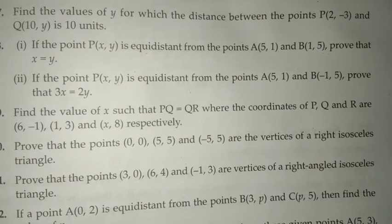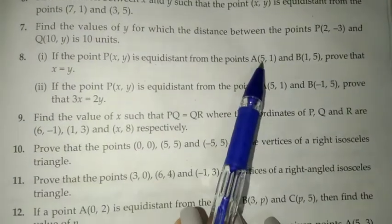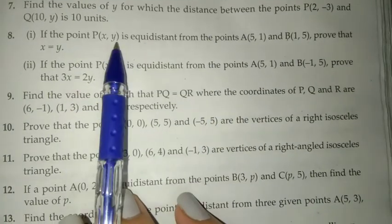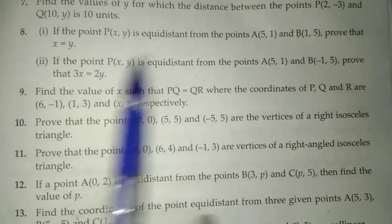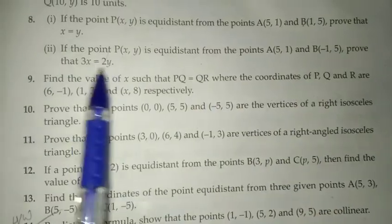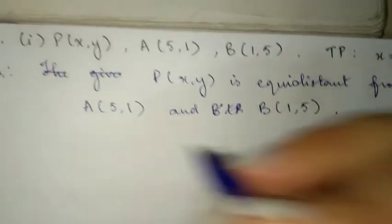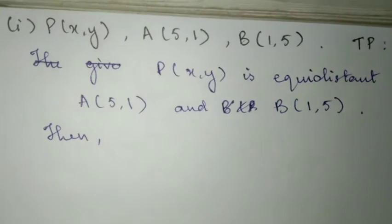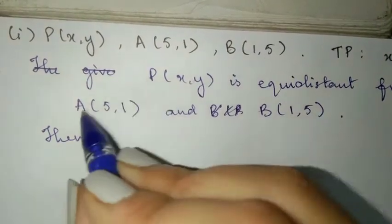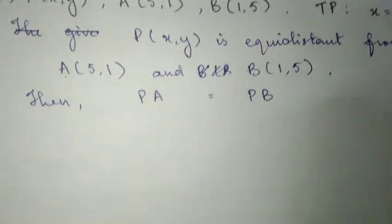Now, next question. If the point P is equidistant from points A and B, we have to prove that X is equal to Y. P(X, Y) is equidistant from A(5, 1) and B(1, 5).